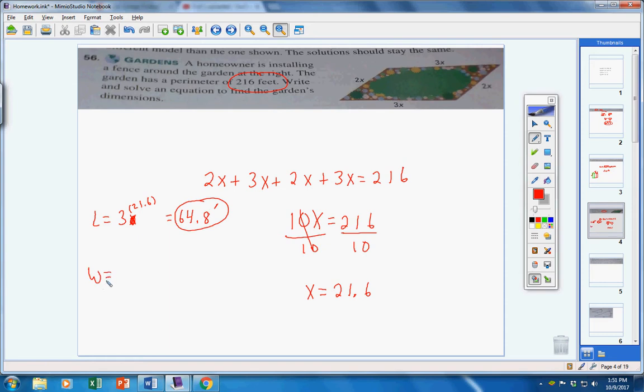The width is the shorter side, it's 2x. And, of course, x is 21.6, so 2 times 21.6 would give you 43.2. So, the dimensions of the garden would be 64.8 feet by 43.2 feet. So, there's the length. There's the width.